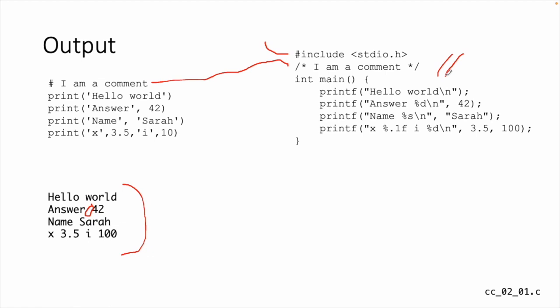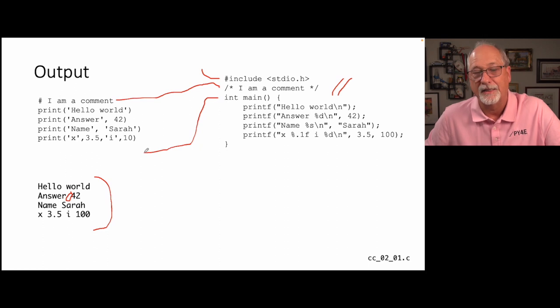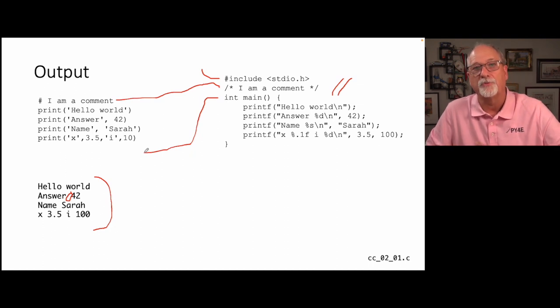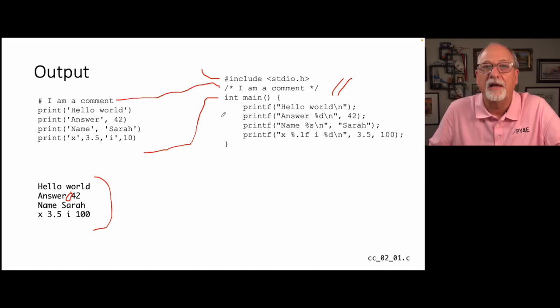Some Python classes use underscore-underscore main and call a function — they're really imitating C in that respect. The definition of a C program is: when it starts running, it searches for a function named main. Later we'll see that this function can actually have arguments and returns an integer indicating success or failure. That first line — 'int main open paren close paren open curly brace' — is the definition of a function named main.